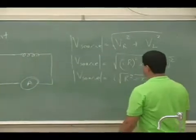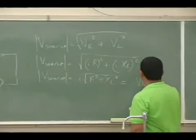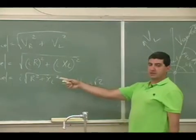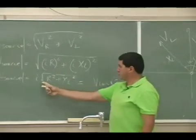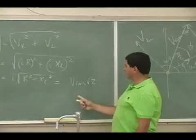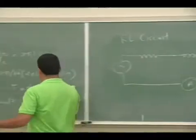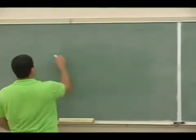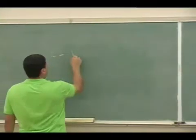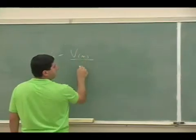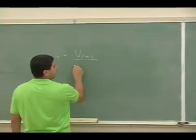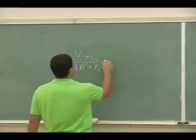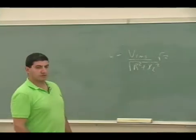And then the voltage of the source magnitude is equal to V root mean square root 2. So the current amplitude is going to equal V root mean square.